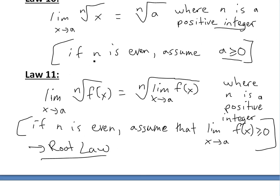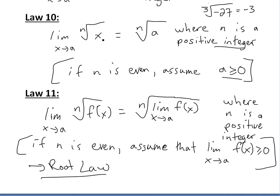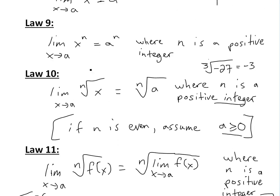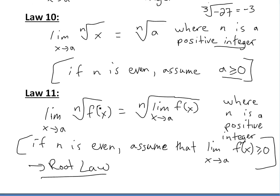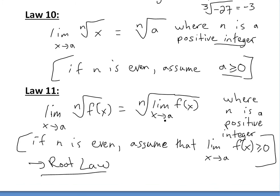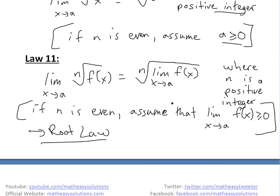Now if we look at law 11, this one's just more general of this. Instead of using f(x) equal to x, you could just plug in the f(x) here. And then the inside is going to be the limit as x approaches a of f(x). So you could just, if you have something like this, you could just put the limit inside. Also the proof of this I'll show later. Now this is where n is a positive integer and if n is even, just assume that whatever's inside the square root is greater than or equal to 0. And this is called the root law.